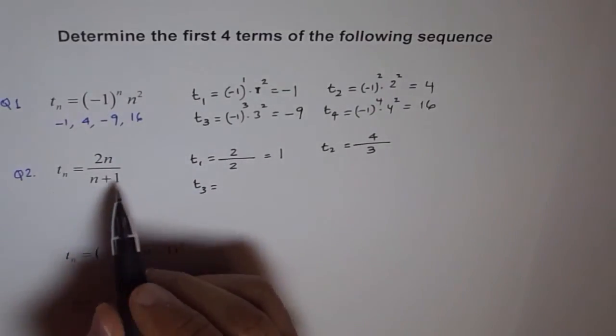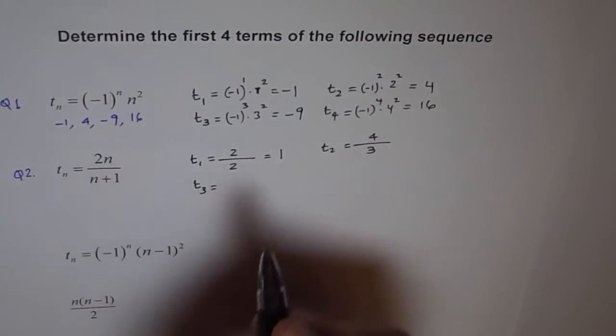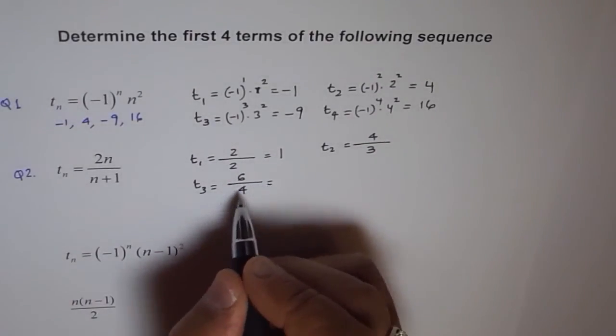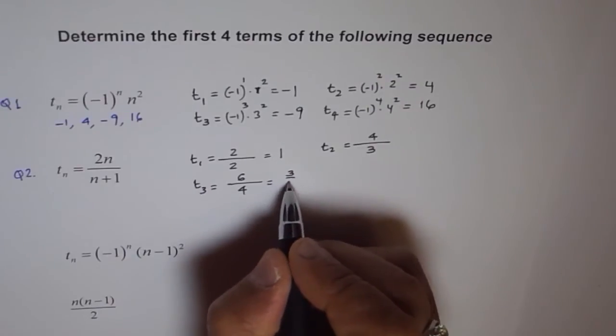So, t3 equals to 2 times 3 is 6 and 3 plus 1 is 4. So, it's 6 over 4 which could be simplified as 3 over 2.